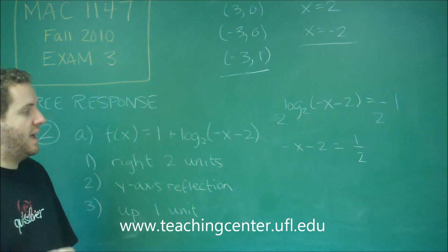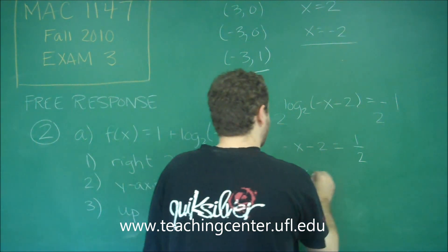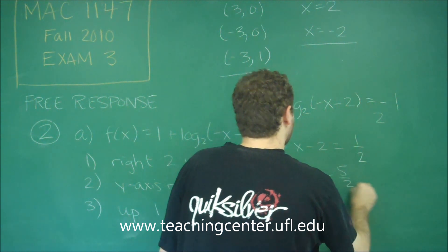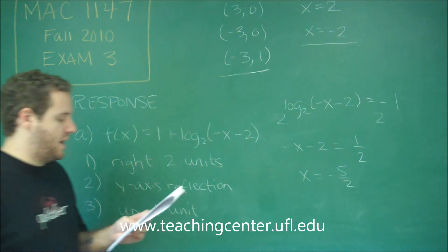And now we just need to solve for x. So by adding x over and subtracting 1 half over we get that x equals negative 5 halves. And that is our x intercept.